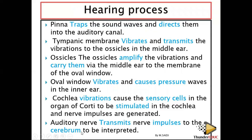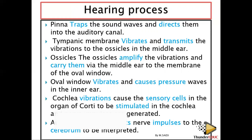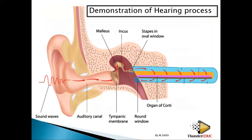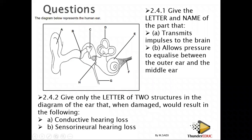The auditory nerve transmits the nerve impulse to the cerebrum for interpretation, and then we can react according to the interpretation of the brain. To explain hearing, you need to master the parts and functions of the ear — then you will be able to understand the concept.